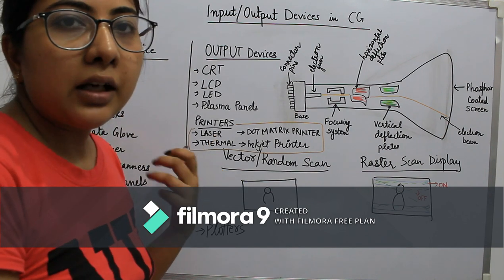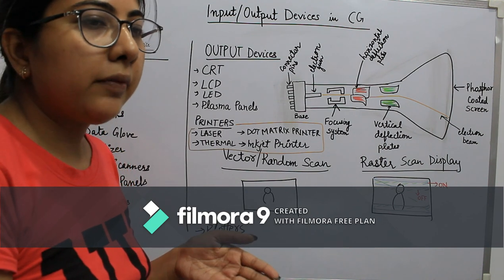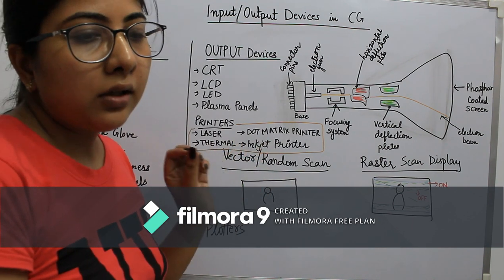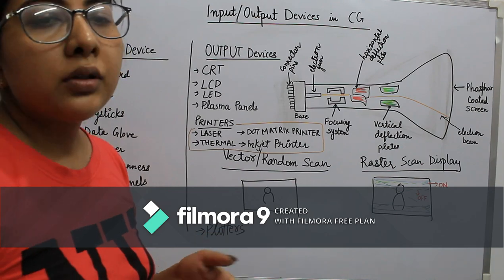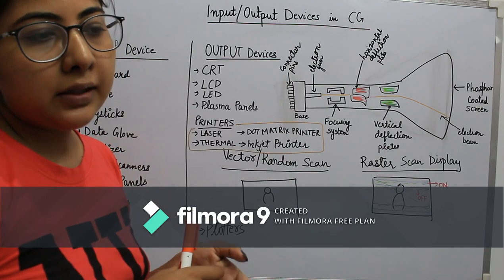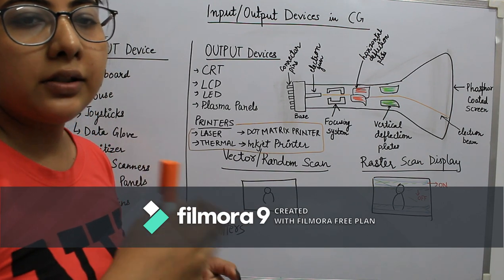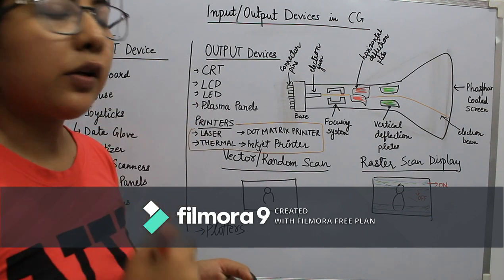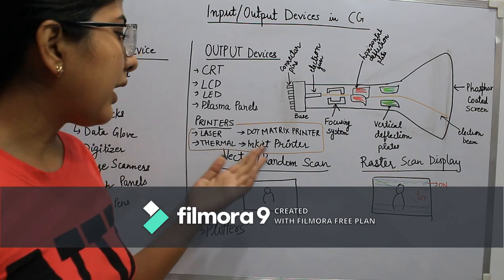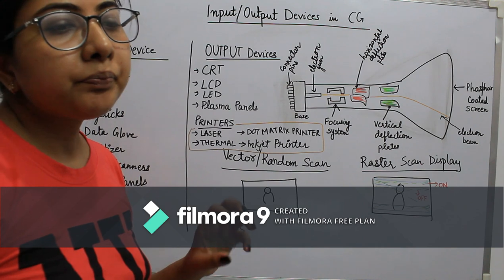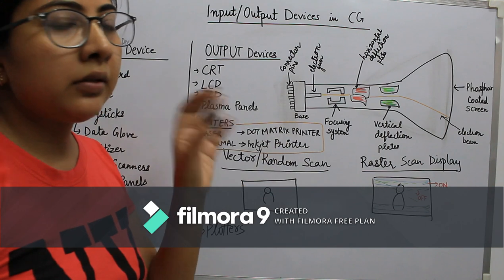Laser printers work by passing a laser beam to print what we need. Dot matrix printers were used in earlier days — every character is represented as a set of dots, that's why it's called a dot matrix printer. Thermal printers generate output by heat. Inkjet printers plot output through a complete set, displaying the whole set on the page.